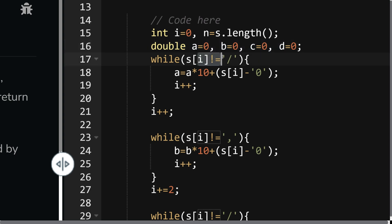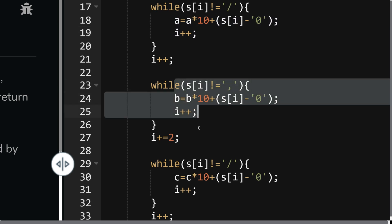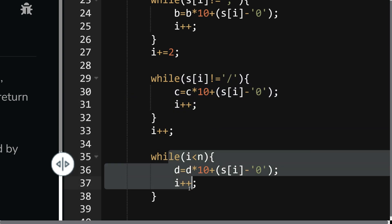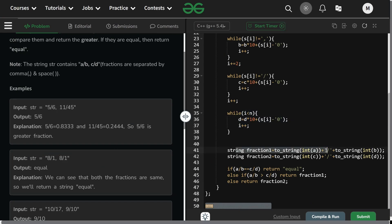Then up till my s of i is not equals to oblique, i plus plus and your a is incrementing. Then it is same for b up till a comma, then it is same for c up till an oblique, and then up till the last of the string is achieved I will get my d at last. What did I do? I just made the answers, it is a by b or c by d, then I compare them. If they are equal return equal, otherwise return the greater fraction. That is all.